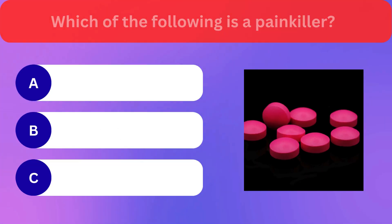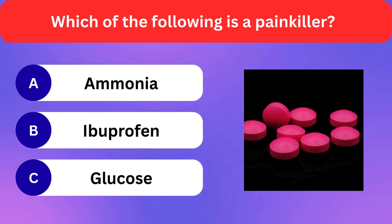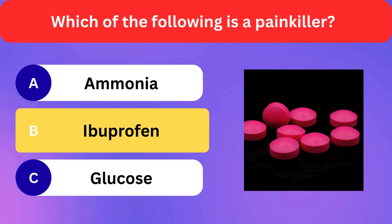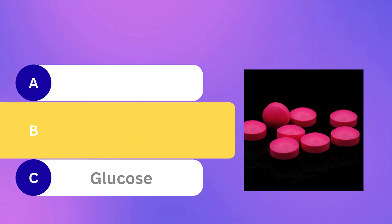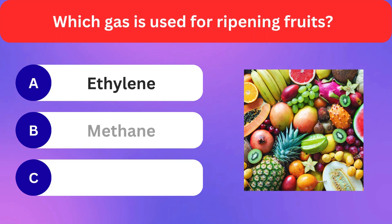Which of the following is a painkiller? Ammonia, Ibuprofen, Glucose. Correct answer is ibuprofen. Which gas is used for ripening fruits?